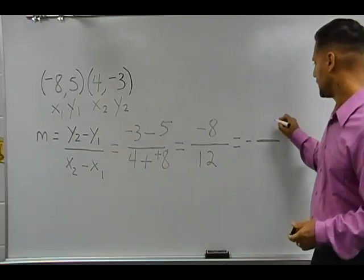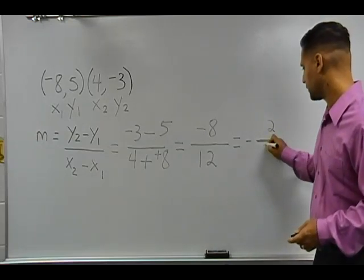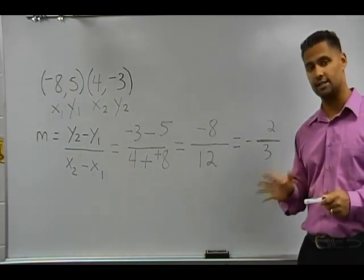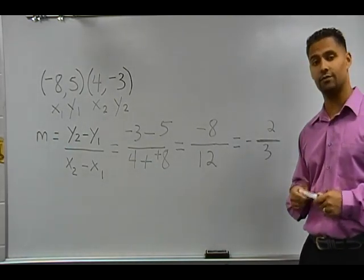When we reduce that, we get an answer of 2 thirds. So we would say that the slope of the line passing through the given ordered pairs in this situation is negative 2 thirds.